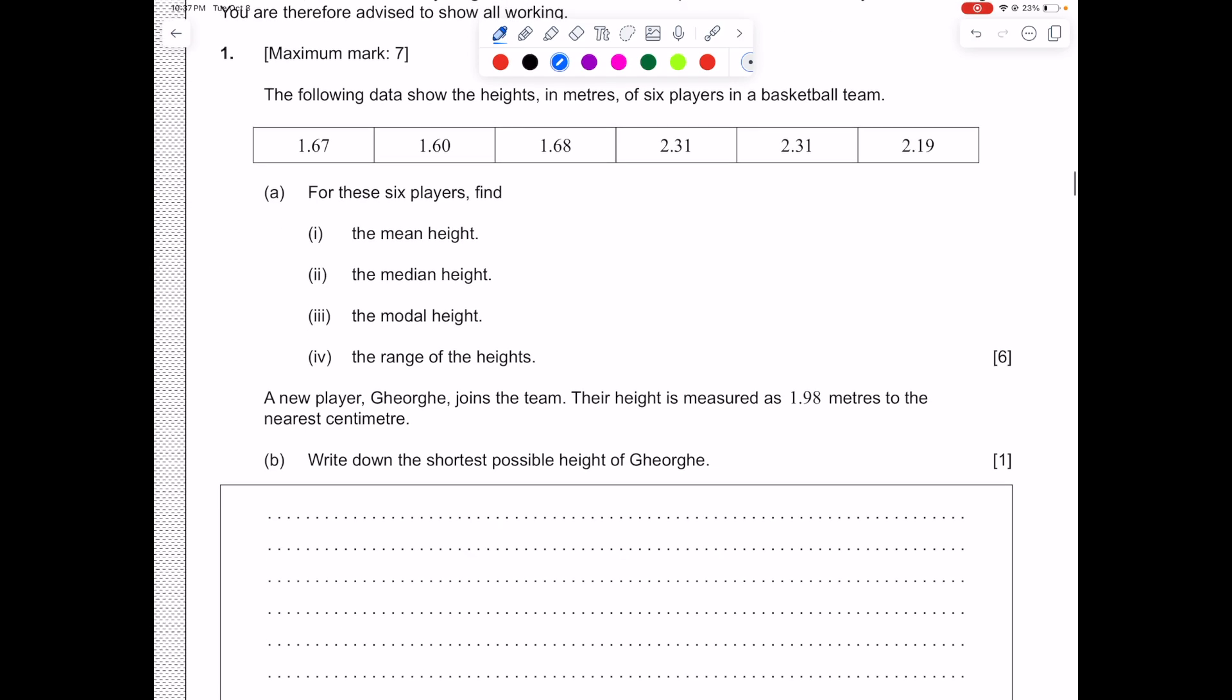It asks for the mean. Here we have six data points. To find the mean we add the numbers up and divide by the number of numbers. Now one thing I do want to mention is that on the IB exam, showing your work is just as valuable, if not more valuable, than actually coming up with the right answer.